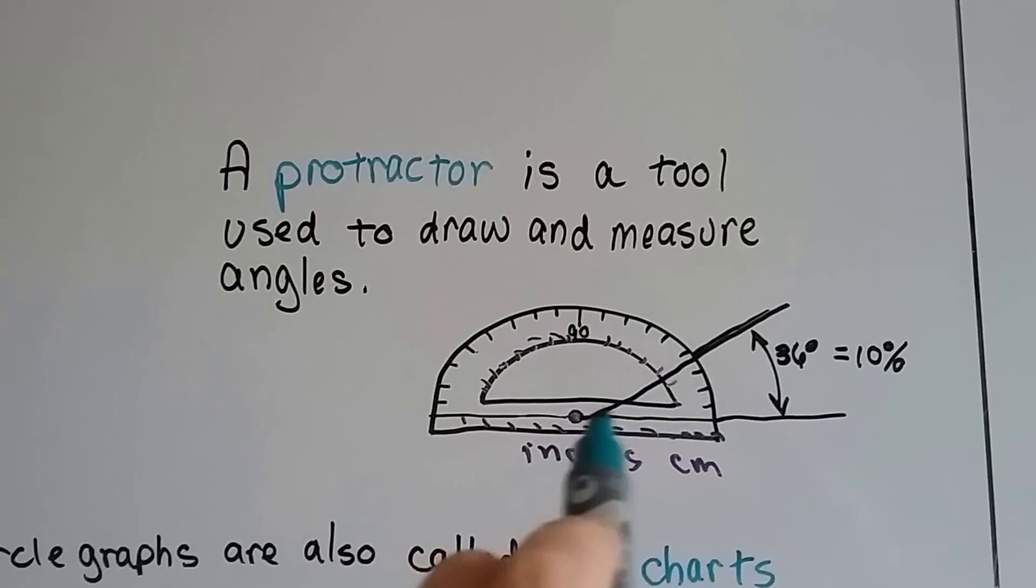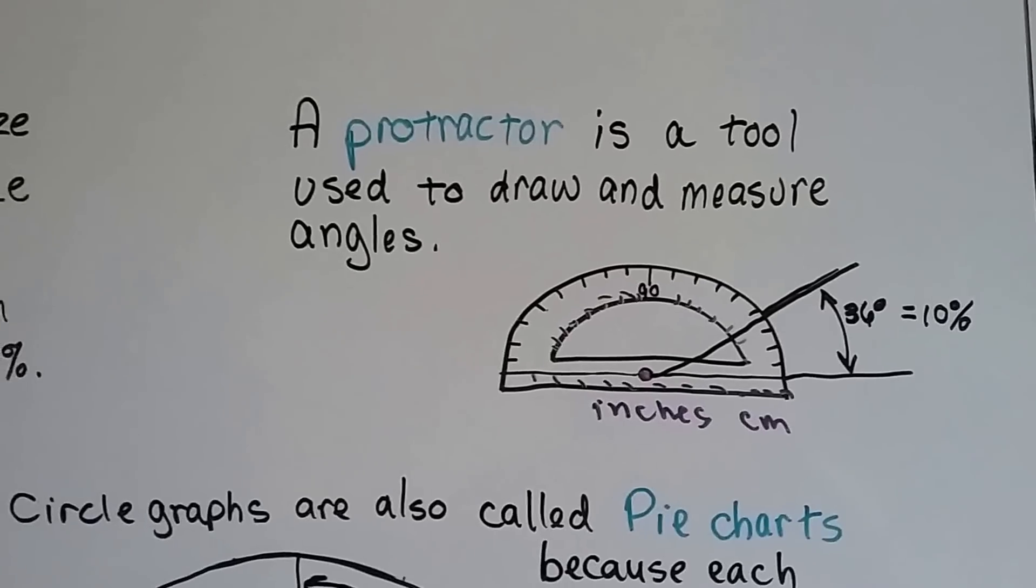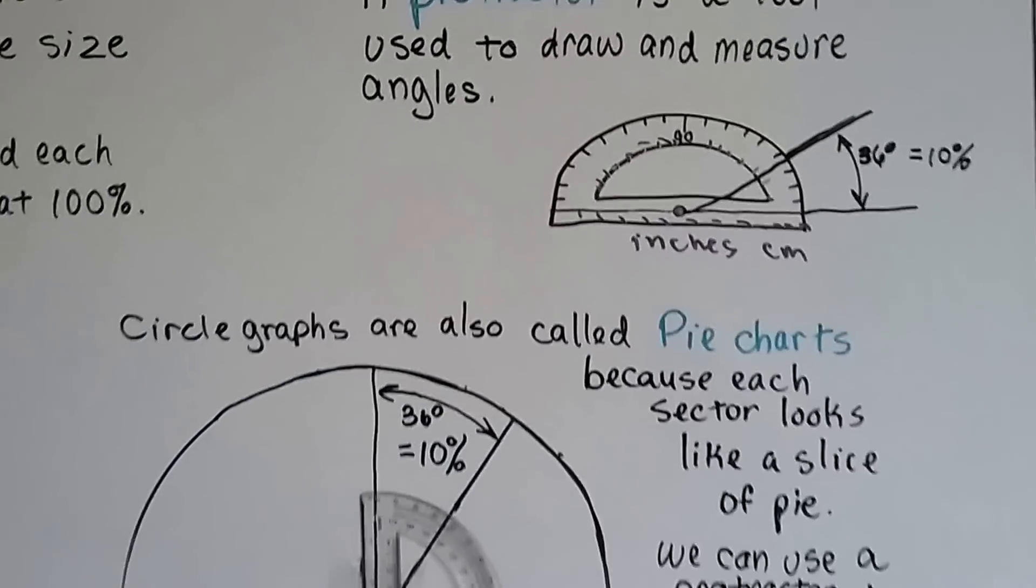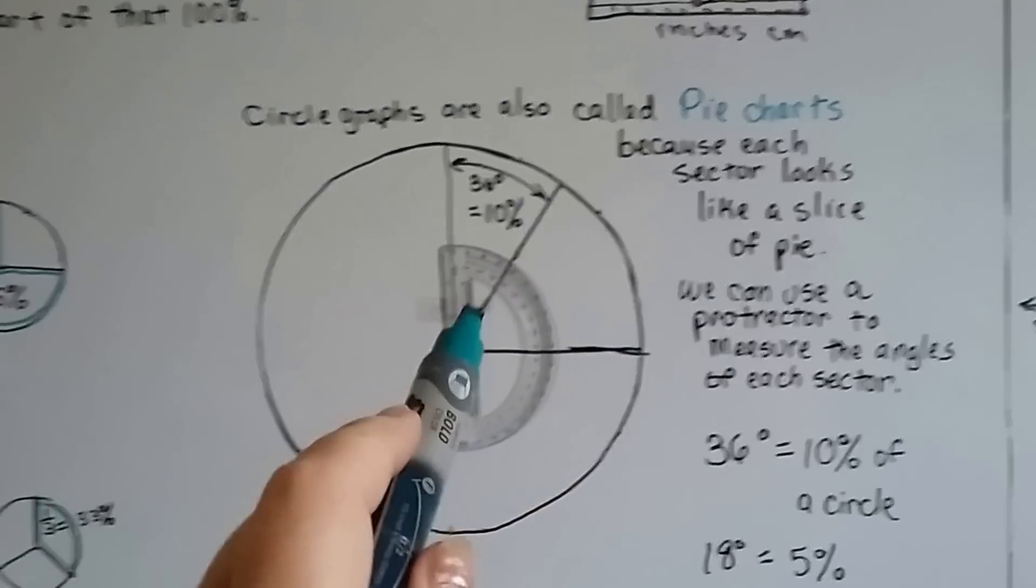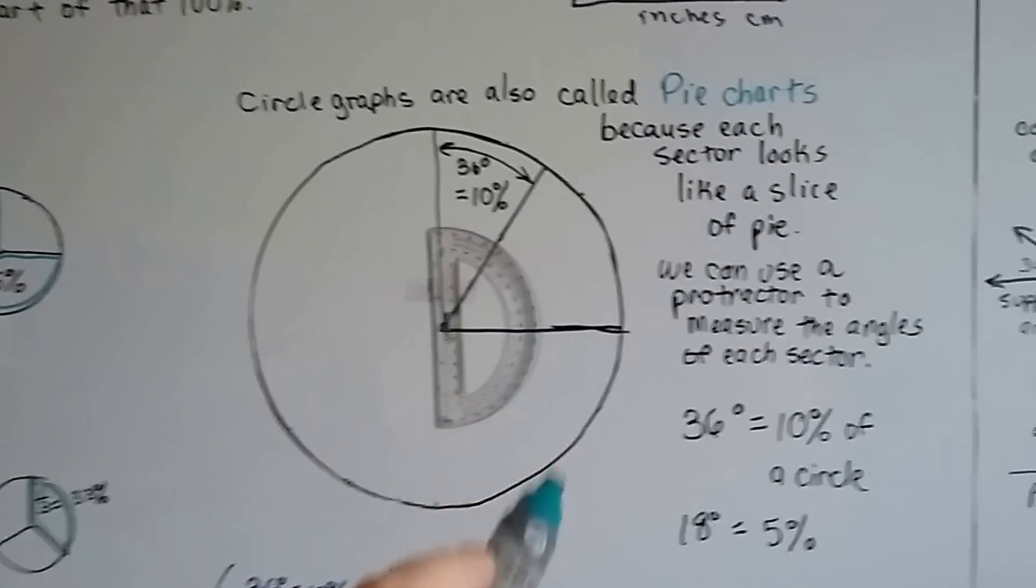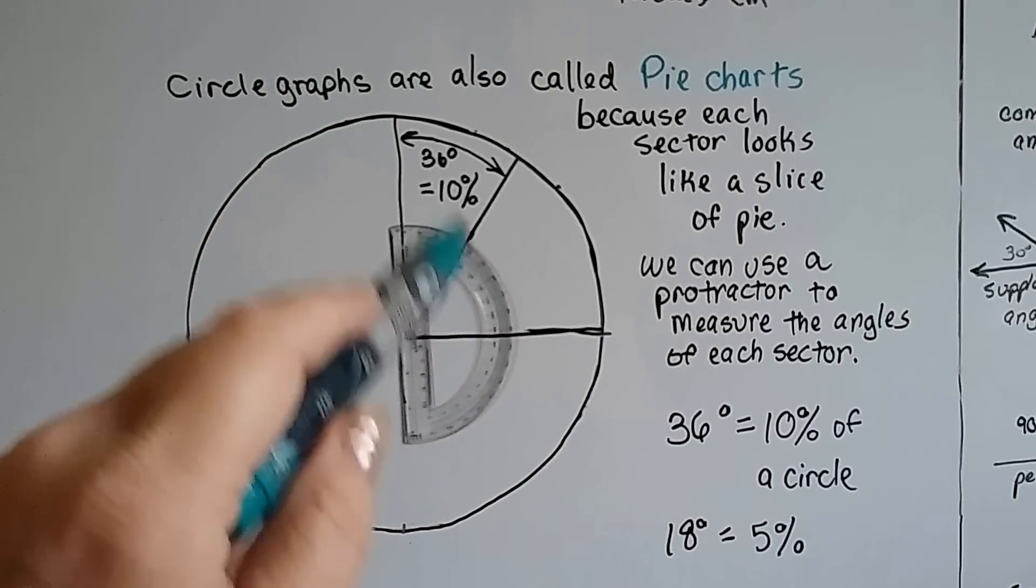10% of a circle is 36 degrees on a protractor. You can use a protractor to make your own circle graphs or pie charts. They are called pie charts because each sector looks like a slice of pie. We can use the protractor to measure the angles of each sector.